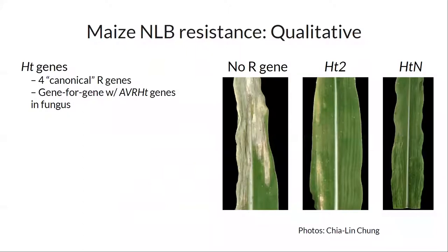What do we know about NLB resistance? There's this dichotomy of qualitative and quantitative resistance. Starting with qualitative R-gene mediated resistance: there are four canonical, well-known R genes — the HT genes — in this pathosystem. HT is short for Helminthosporium tersicum, an outdated name for the fungus. Like the standard gene-for-gene model, you've got this interaction with AVRHT genes — avirulence HT genes — in the fungus.